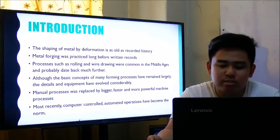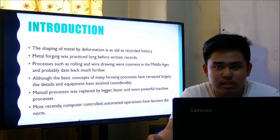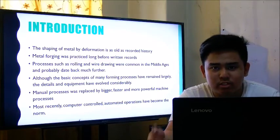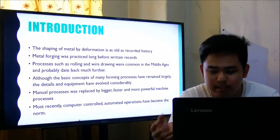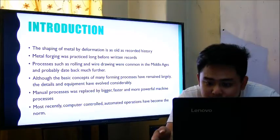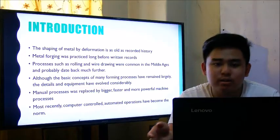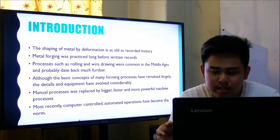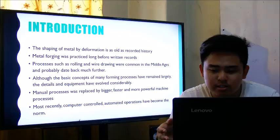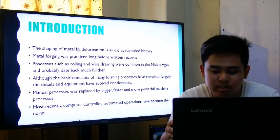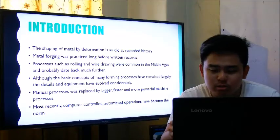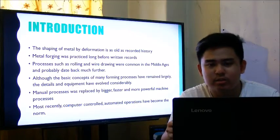Metal working consists of deformation processes in which a metal — in the form of a sheet, plate, billet, or block — is changed by tools or dies. The design and control of such processes depends on the characteristics of the metal itself, the conditions of the workpiece or the tools, and the mechanics of plastic deformation.